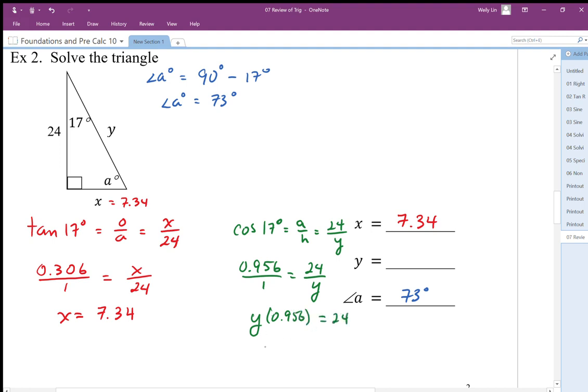So algebraically solving this, I'm going to cross multiply. So I get—times both sides by y, divide both sides by 0.956. So 24 divided by 0.956, and I'm going to get 25.096, so I'm going to round that to 25.10. So the length of that side is 25.10. Again, you may have a little bit of discrepancy based on the rounding, but as long as you're near 25, you've done the right calculation.